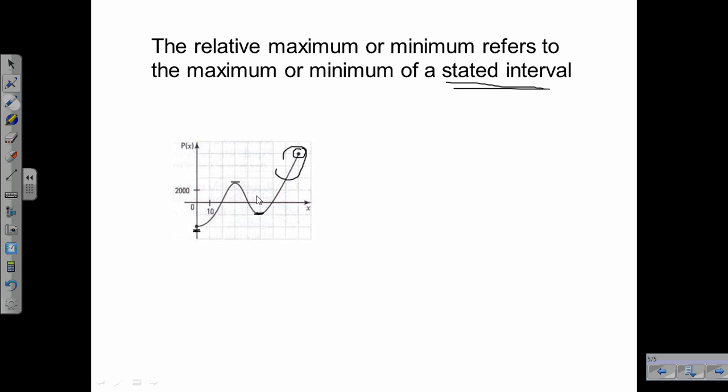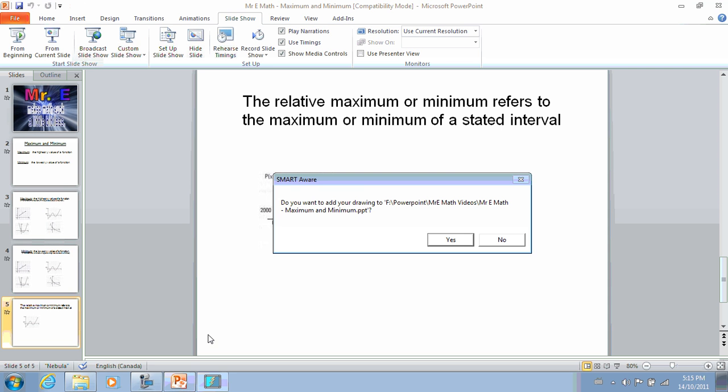If we were to say we're looking between 10 and 60, then we'd say we have a relative maximum of about two thousand five hundred or three thousand, and we have a relative minimum of about negative two thousand. So there you go. Thank you.